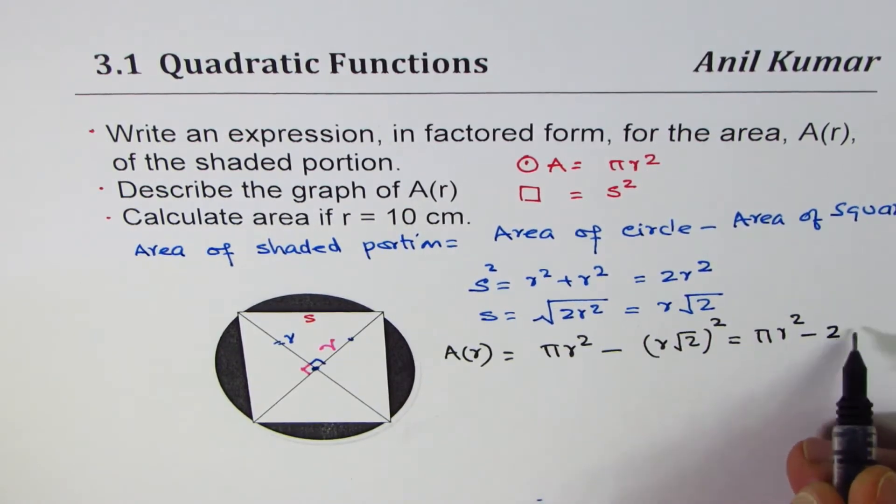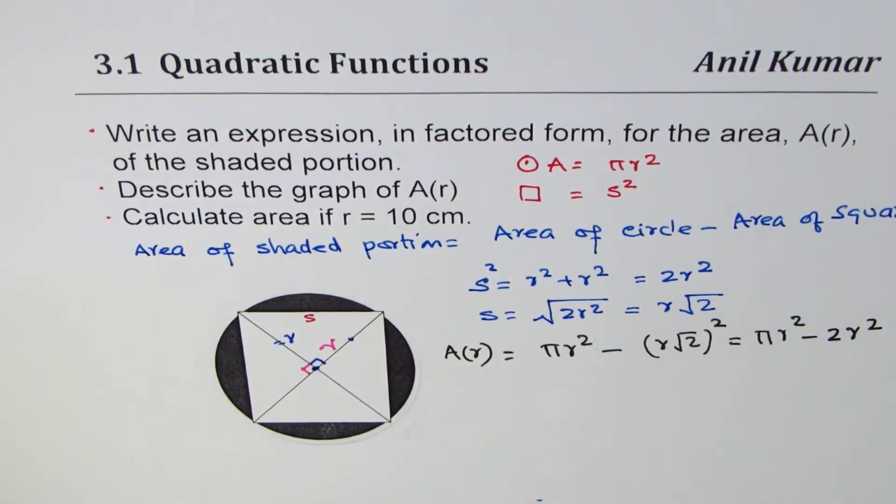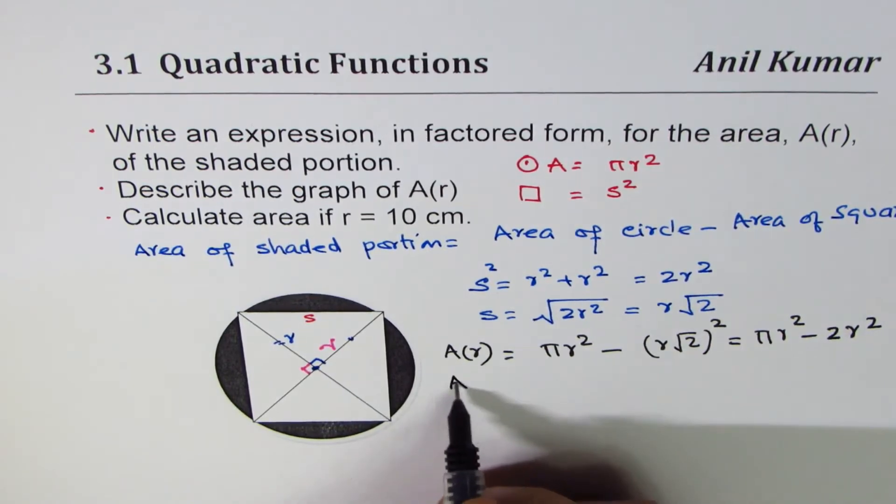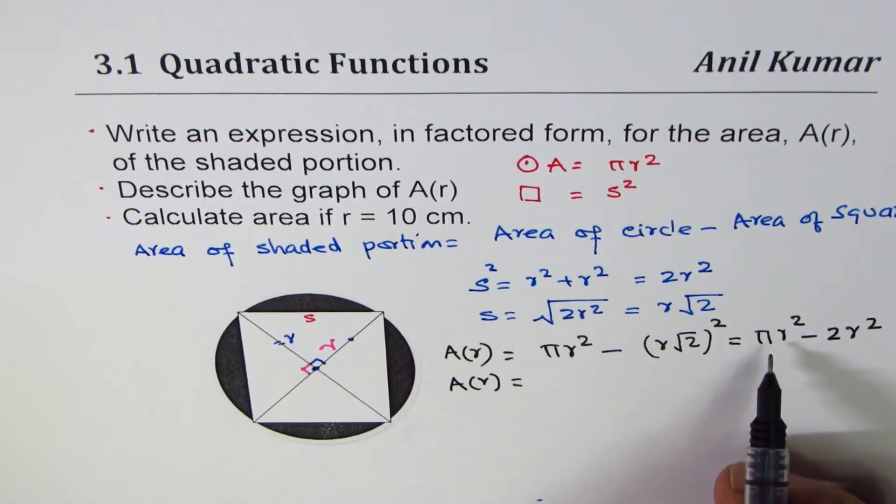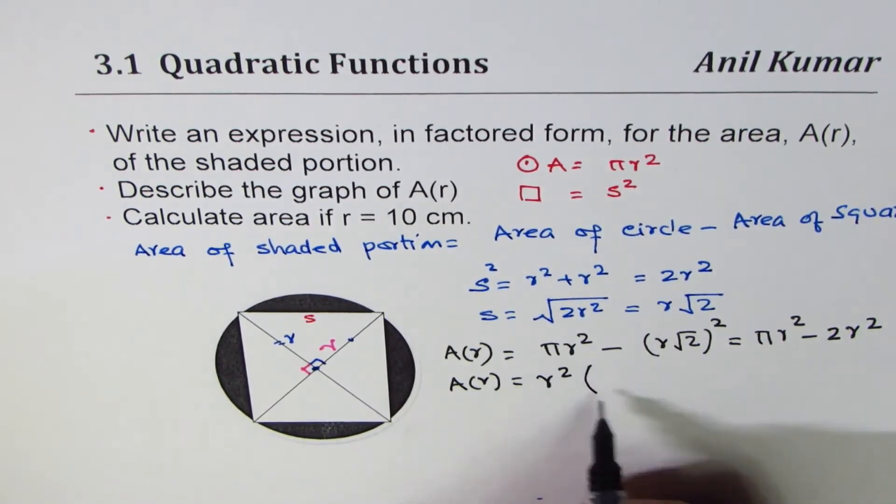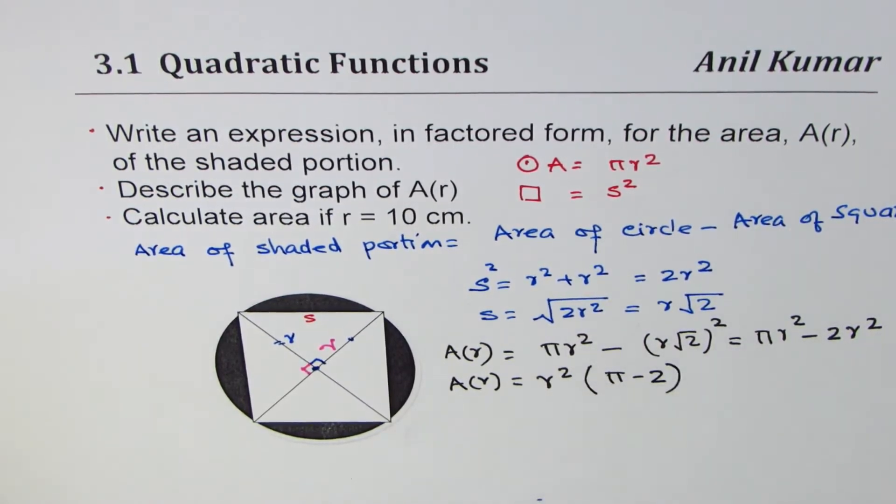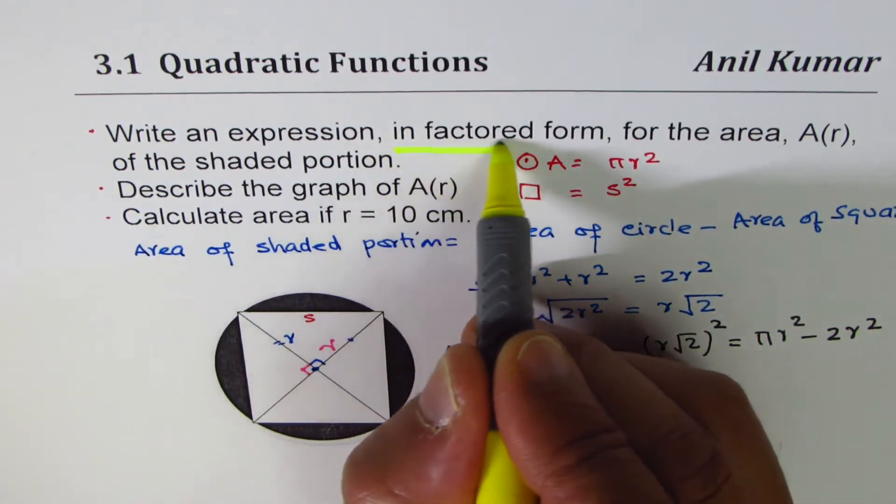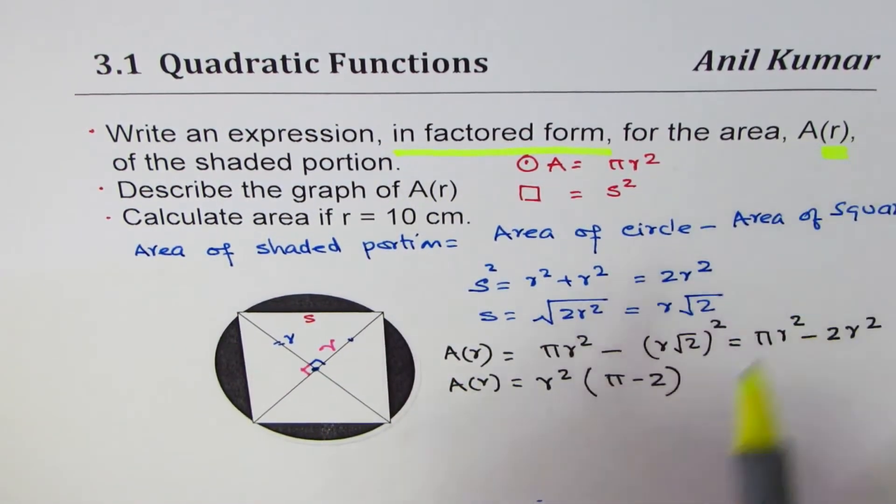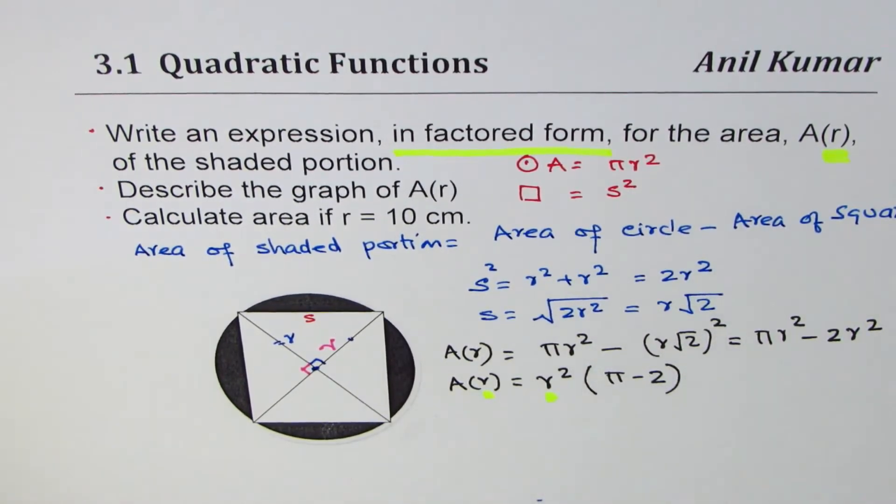We can now factor - we have r² as a common factor. Since r² is a common factor, we get π minus 2. So this becomes A(r) = r²(π - 2), the area of the shaded portion in factored form. We have satisfied all conditions - writing it in factored form, A(r) means in terms of r.